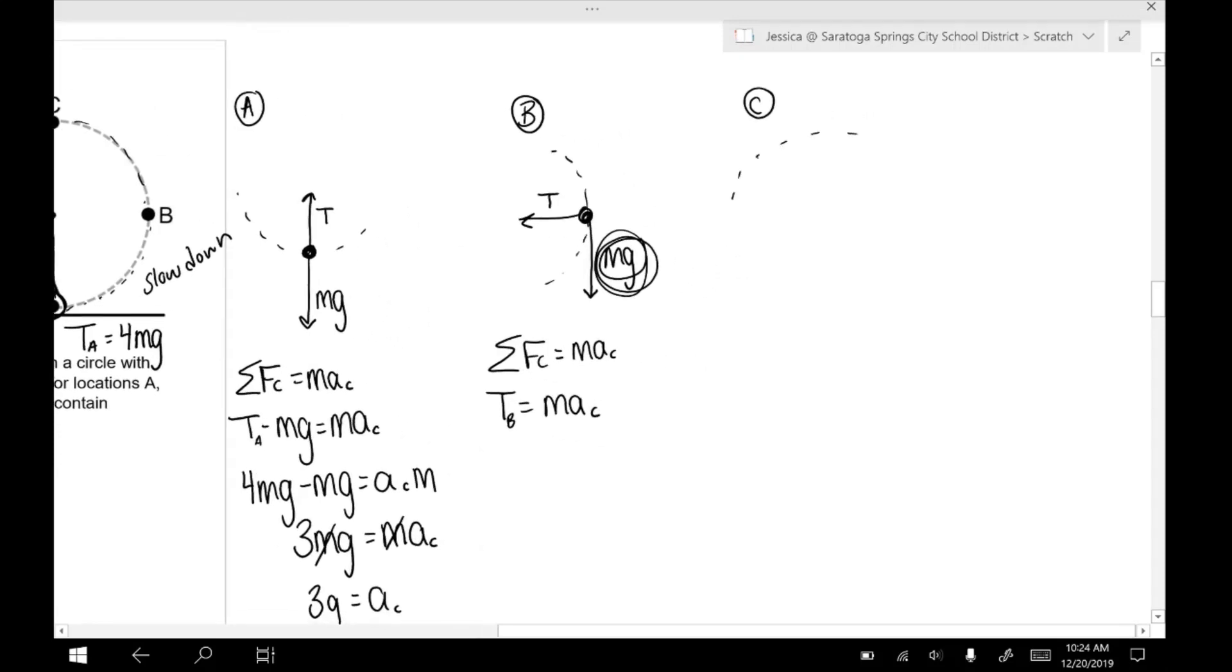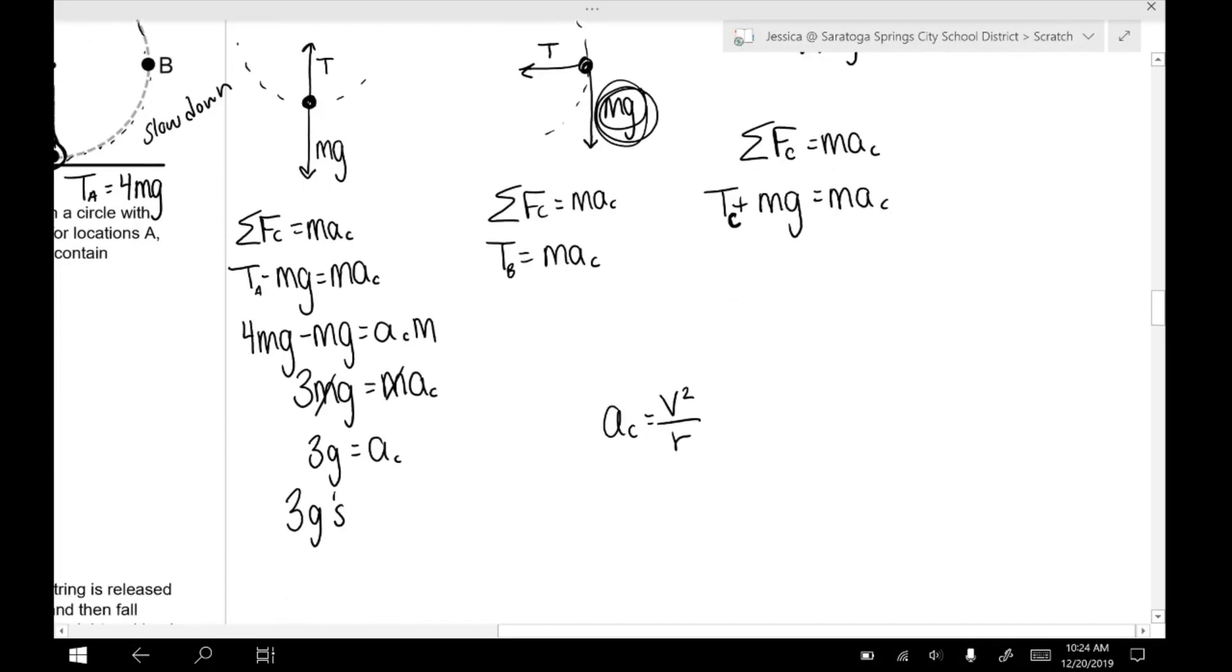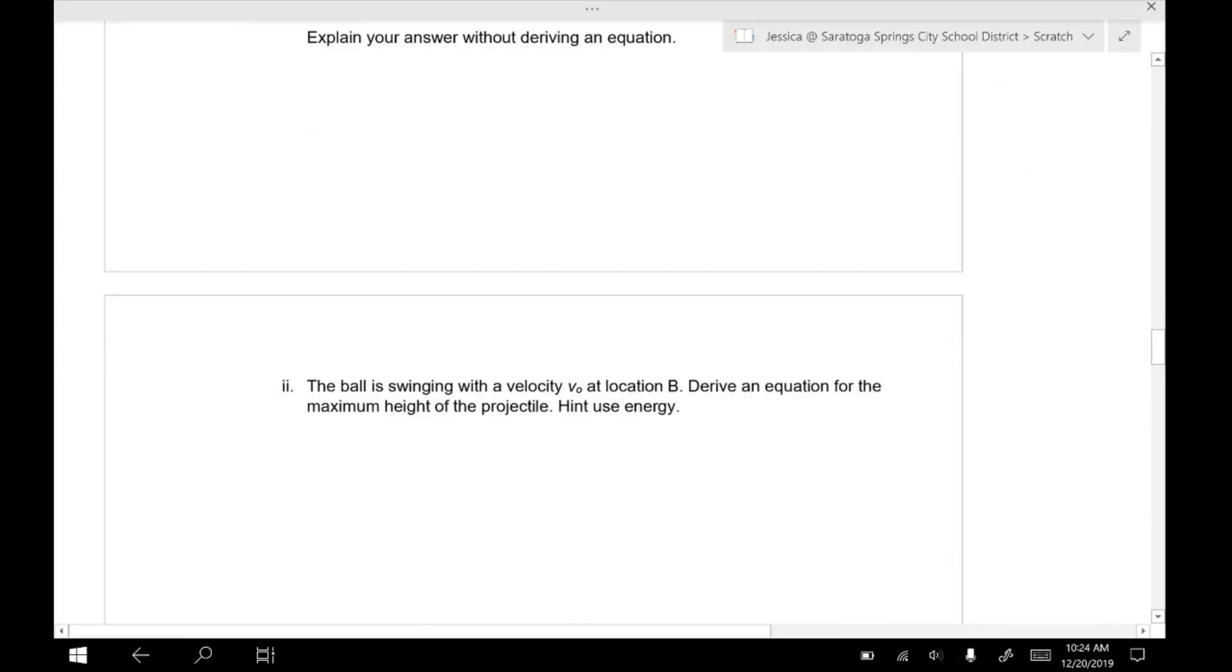Okay. So at C, we're at the top of the circle. We have a tension pointing downward and mg pointing downward. Okay. So since they are both pointing either into or out of the circle, both of those forces contribute to the centripetal force. They're both pointing into the circle. So they're both positive. So this is TC. Okay. Remember at any of these locations, you could use the equation A equals V² over R to help you find the speed of the object at that location. Just keep in mind that R for this problem is the variable L.